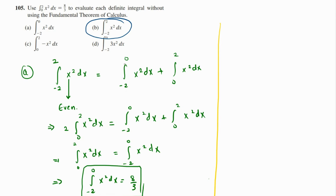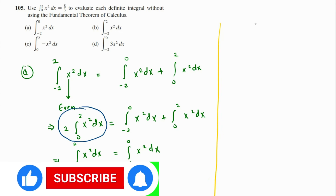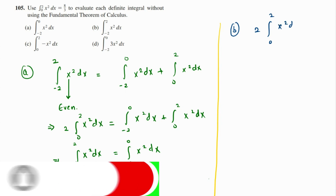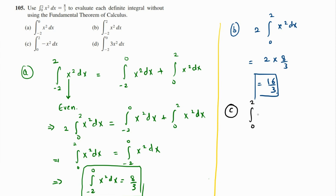For part b, the integral from negative two to two of x squared dx is nothing but two times the integral from zero to two of x squared dx, because x squared is an even function. So this becomes two times eight over three, which is sixteen over three.